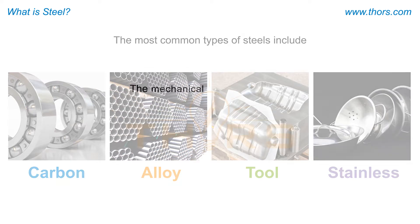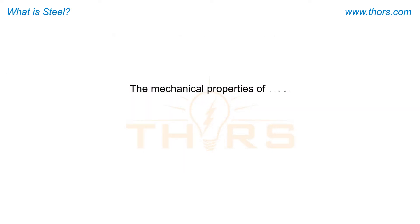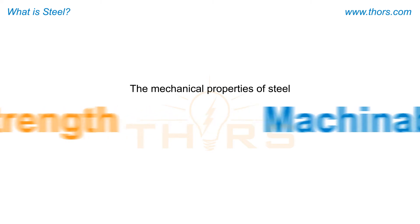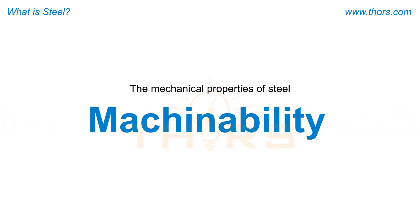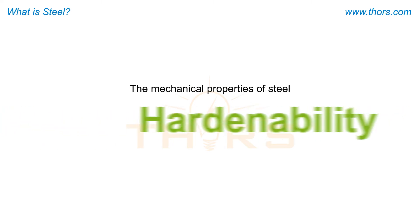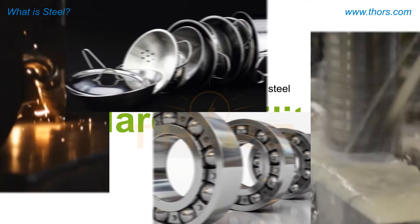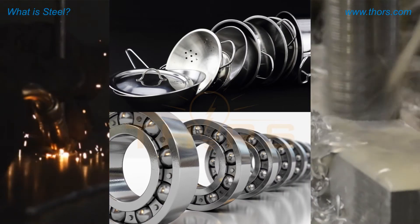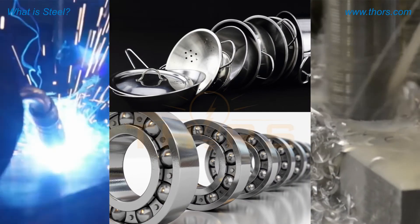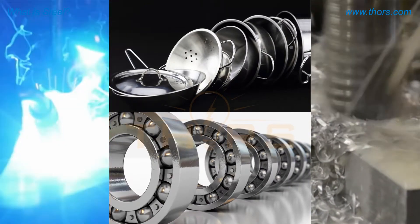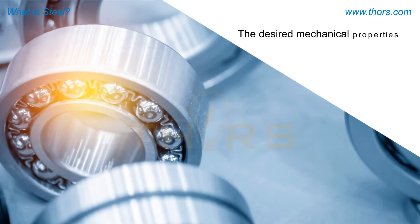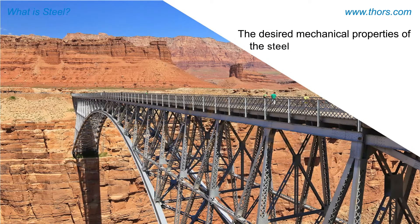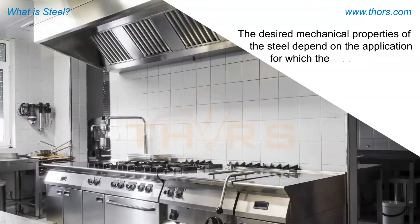The mechanical properties of steel, such as strength, machinability, and hardenability, are important to understand prior to utilizing the steel for various products. The desired mechanical properties of the steel depend on the application for which the steel is produced.